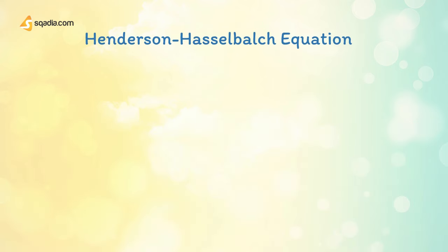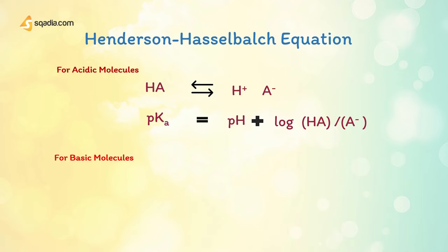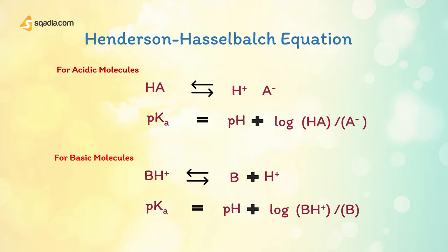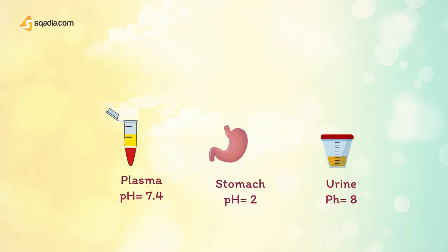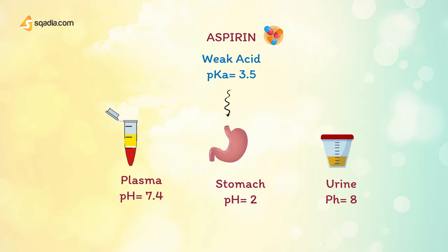The pKa of a drug is defined as the pH at which 50% of the molecules in solution are in the ionized form, and is characterized by the Henderson-Hasselbalch equation. Drugs will tend to exist in the ionized form when exposed to an environment with a pH opposite to their own state — acids become increasingly ionized with increasing pH. It is useful to consider three important body compartments: plasma, pH 7.4; stomach, pH 2; and urine, pH 8. For example, aspirin, a weak acid with pKa of 3.5, will have absorption favored in the stomach and not in the plasma or urine, where it is highly charged.